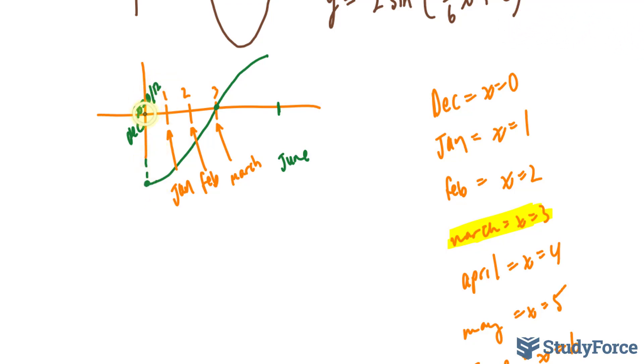That means our phase shift, rather than starting over here when sine normally starts, has been shifted 3 units to the right. So our phase shift equals 3.